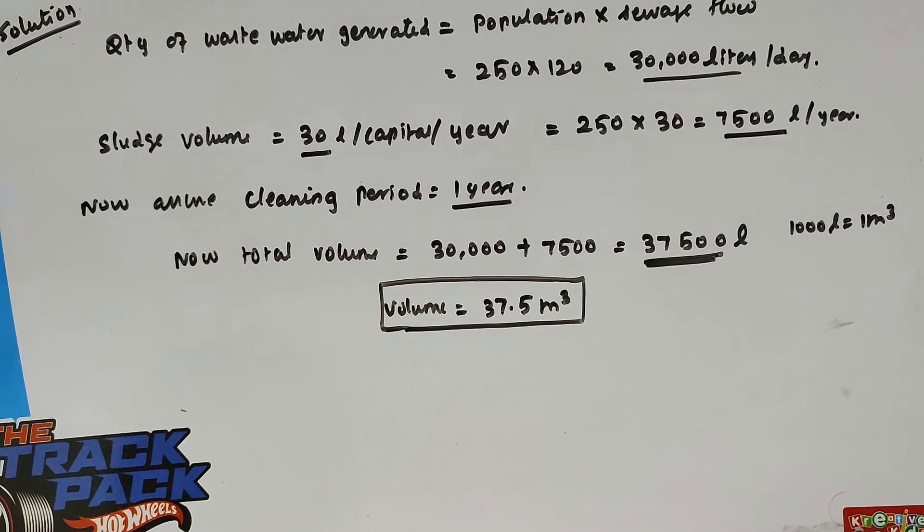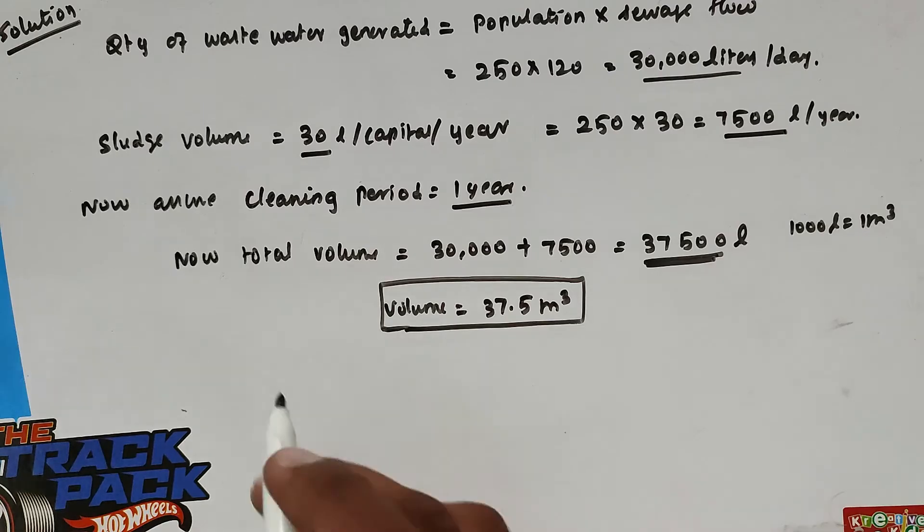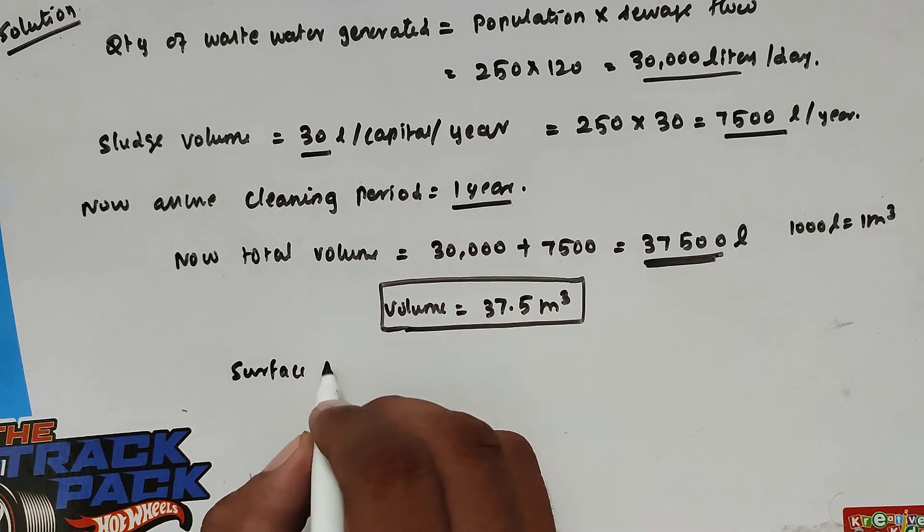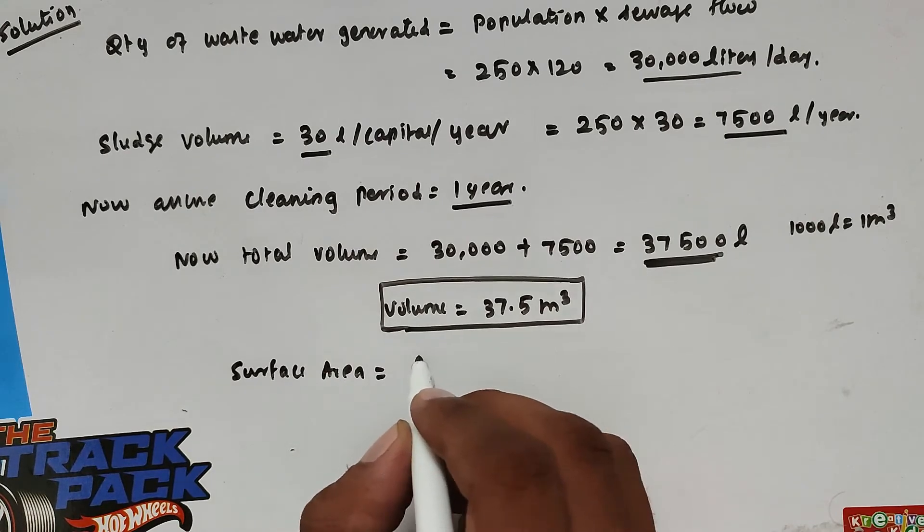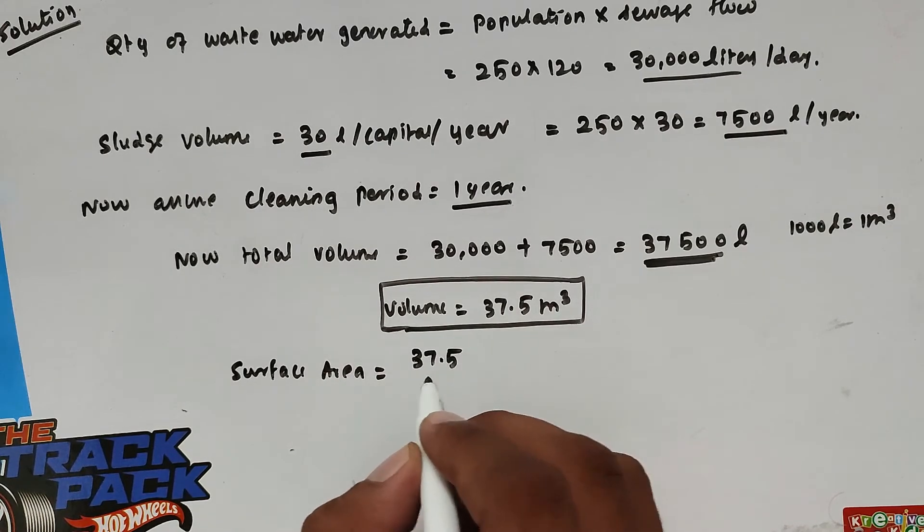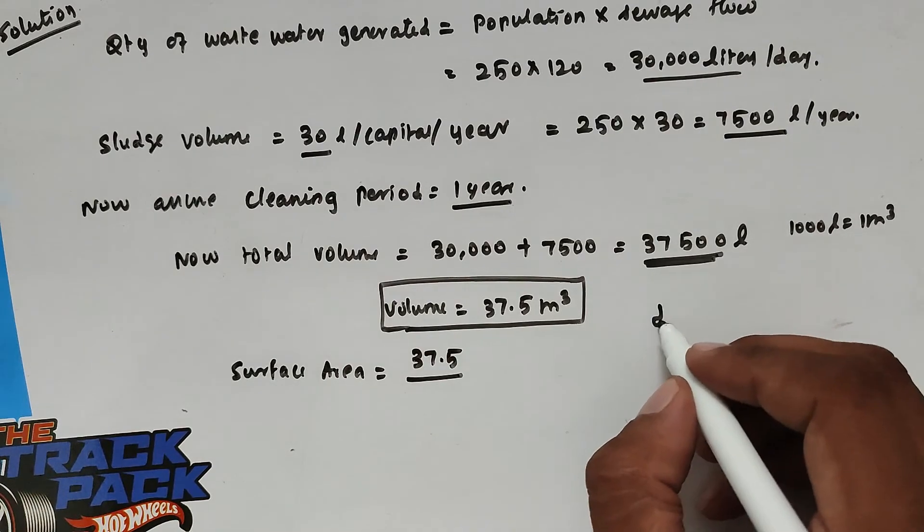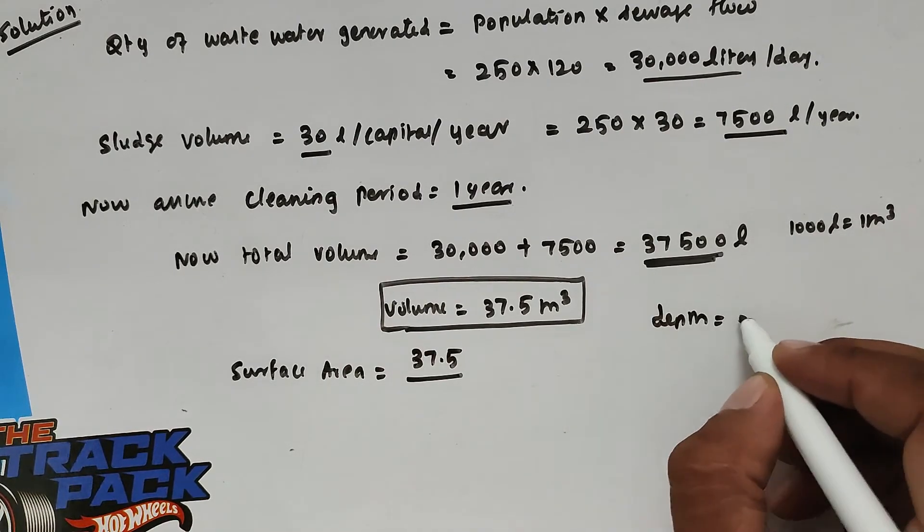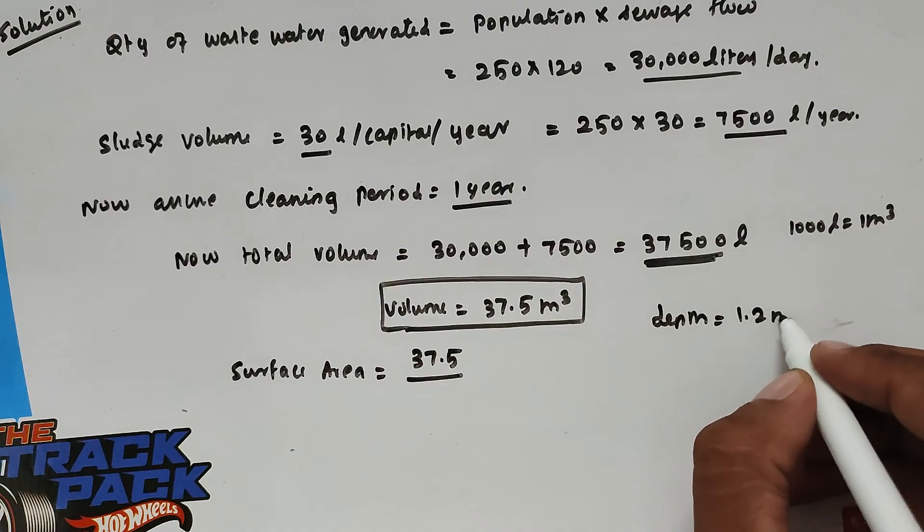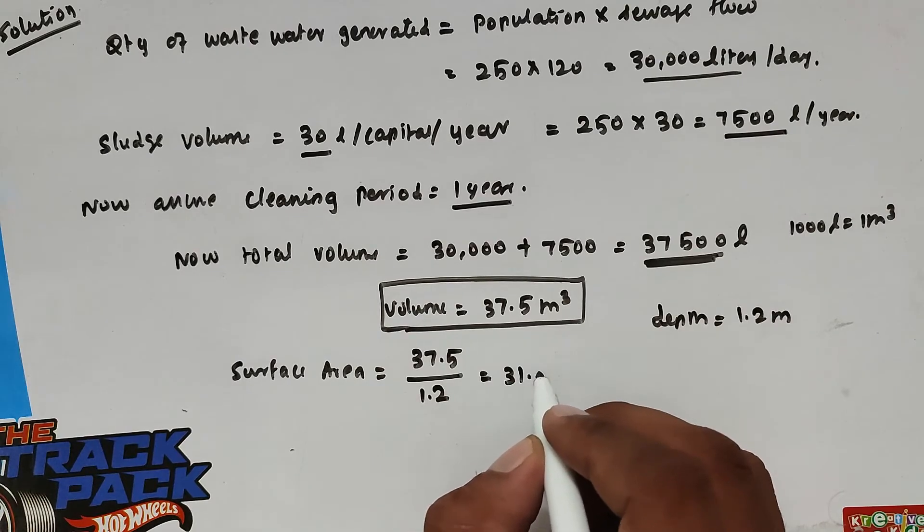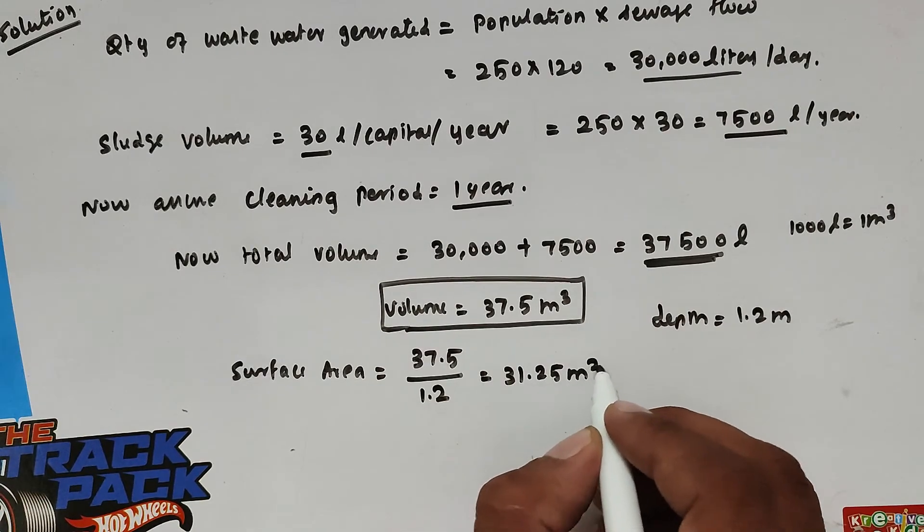From that, we can find out the depth and size of the tank. So now, surface area: the total volume is 37.5 m³ divided by depth we can assume. Depth we can take 1.2 meter. So the total area will be 31.25 meter square.